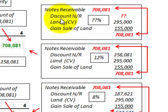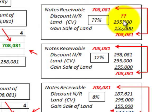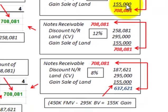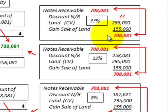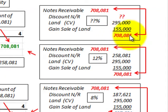Let's look at how we would balance this out and make our comparison. For notes receivable, we would debit $708,081. The land's carrying value of $295,000 would be a credit, and the gain on the sale of the land — based on the fair market value — we can calculate: $450,000 fair market value less the book value of $295,000 gives us a $155,000 gain. The discount on the notes receivable is the question mark. We know we have to come up with a balance of $708,081 to match the notes receivable debit.